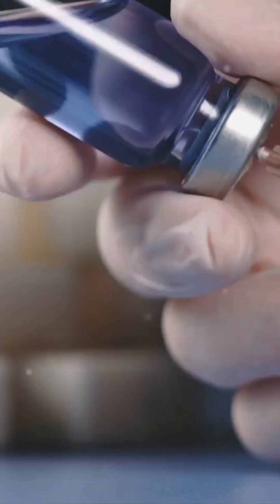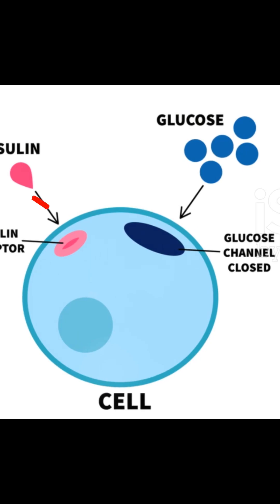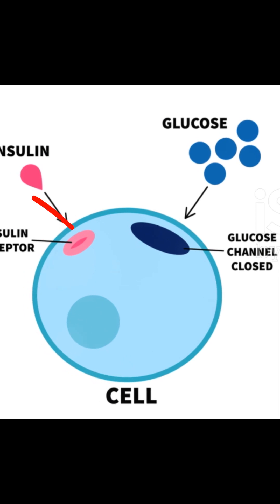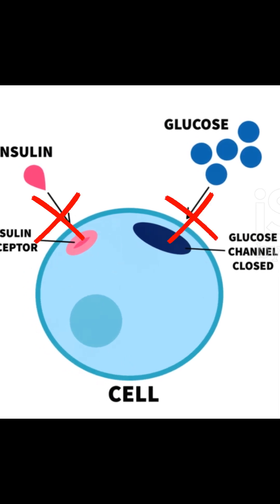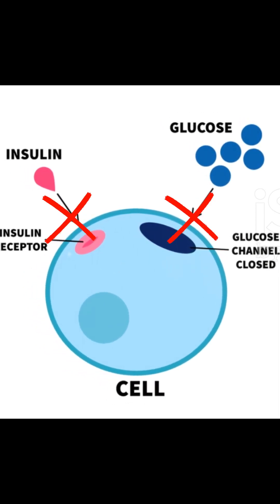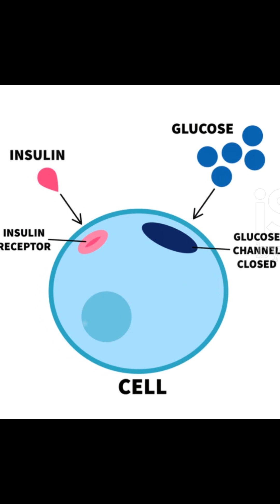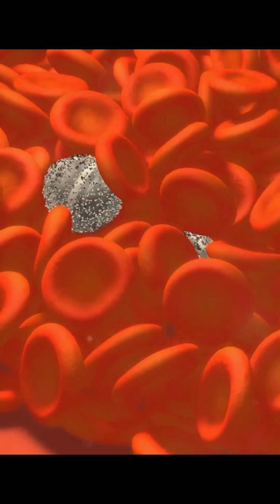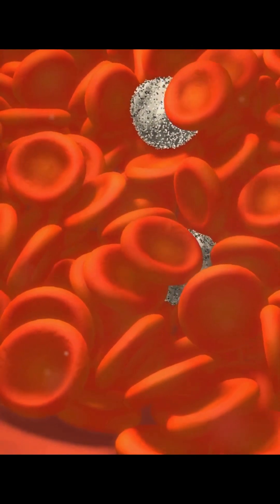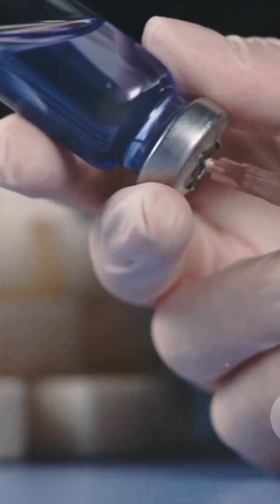What happens in diabetes is that our cells fail to recognize our own insulin and they do not open their doors. Our cells say, 'We don't know who you are,' and they remain shut. This is called insulin resistance. As a result, glucose remains in the bloodstream, leading to diabetes and other complications.